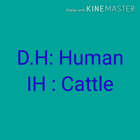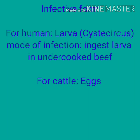For Taenia solium, the intermediate host is the pig. The adult worm resides in the human and the larval stage develops in the cattle. The infective form for human is the larva, also known as cysticercus, because the larva is in a cyst form — a fluid-filled cyst in which the oncosphere is located. In Taenia saginata it is called Cysticercus bovis, and in Taenia solium it is called Cysticercus cellulosae. The mode of infection in humans is ingestion of larva in undercooked beef.